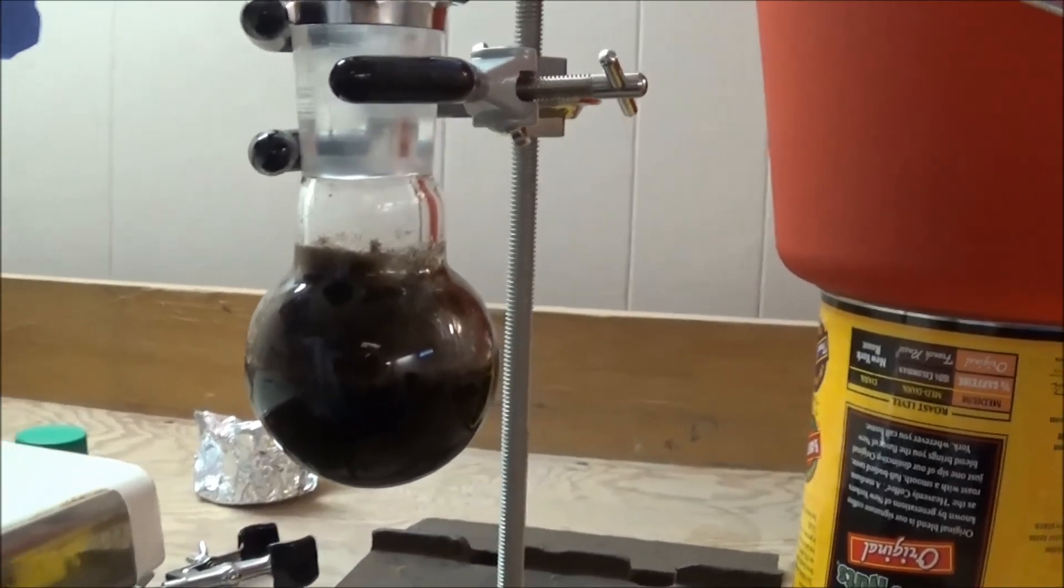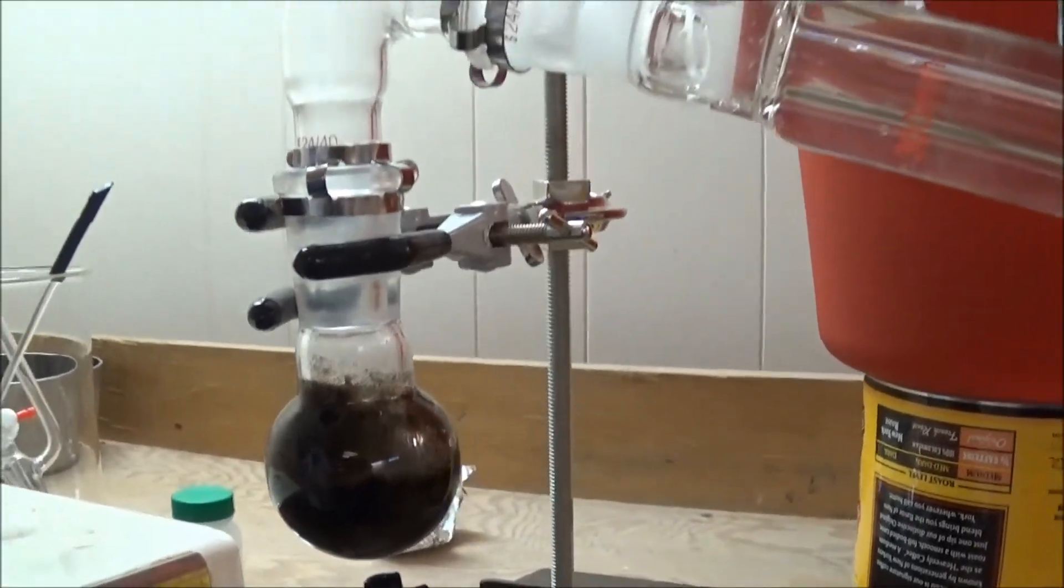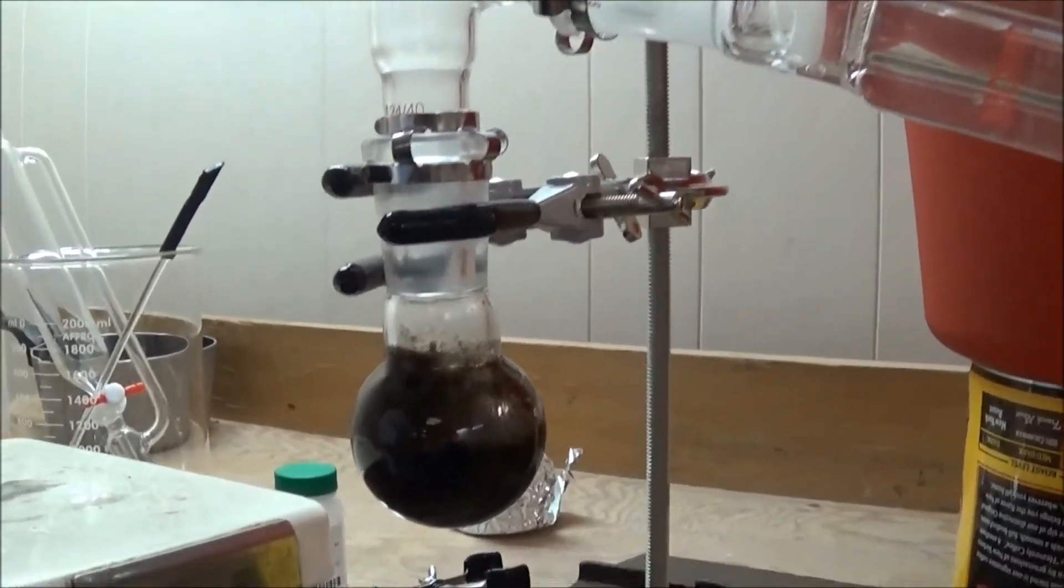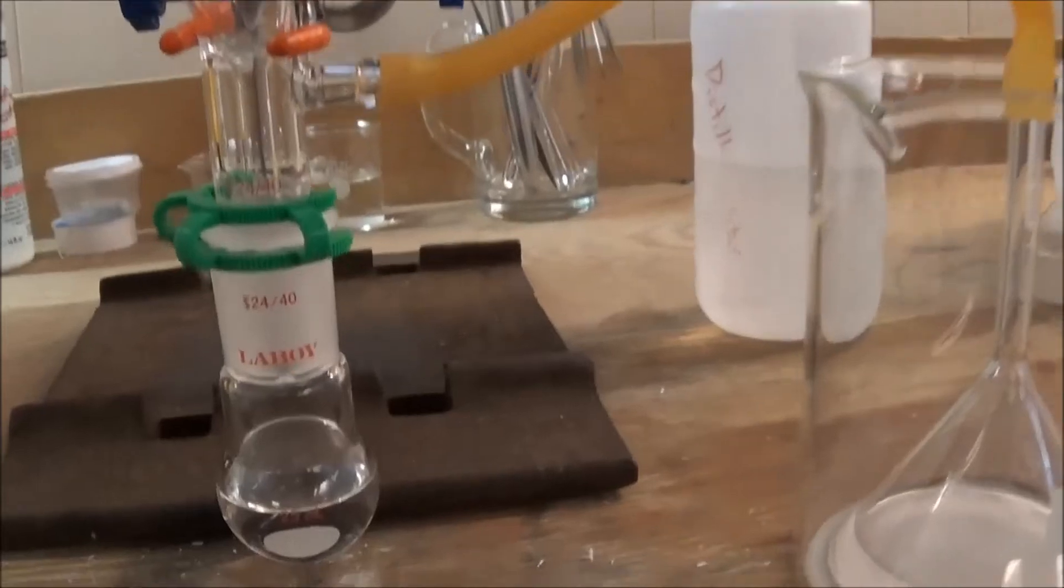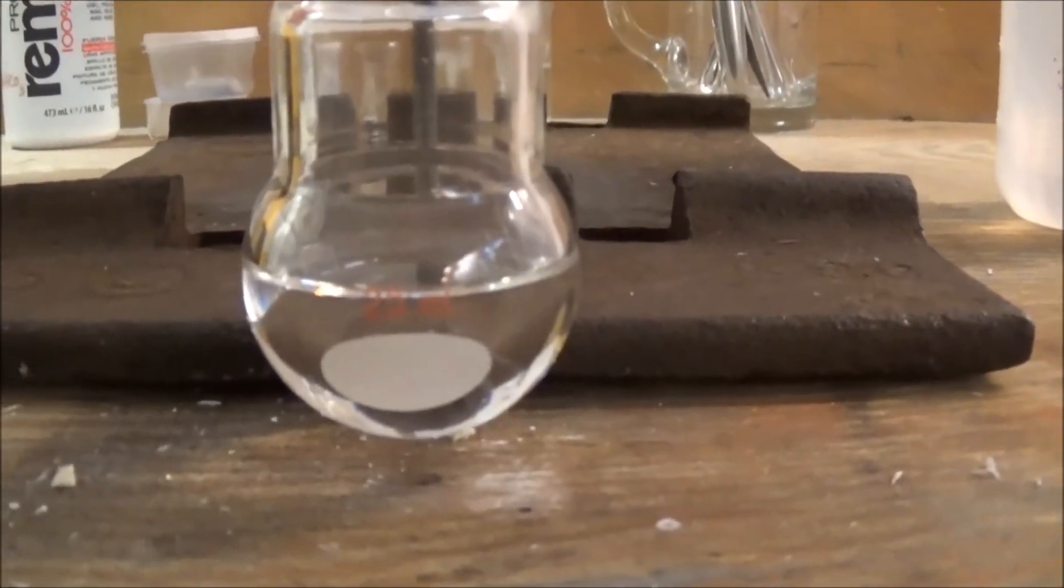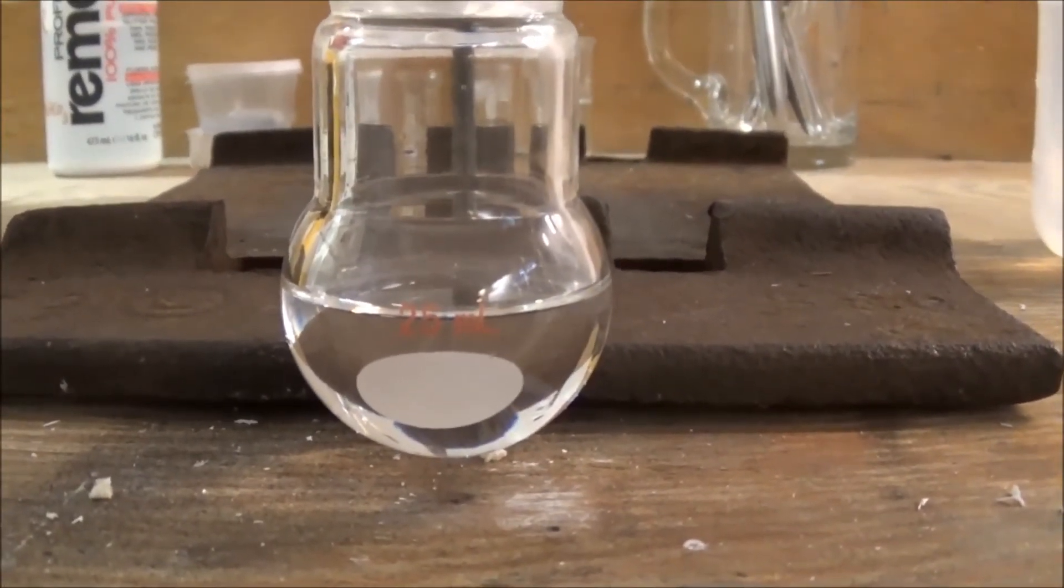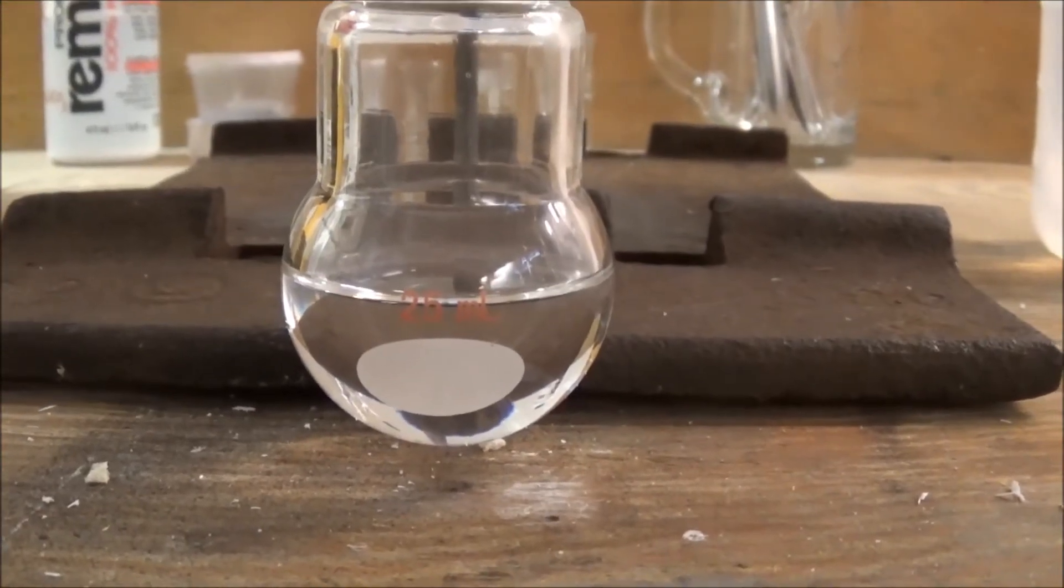It started to get very foamy, and it was going to go in the condenser, so I turned off heating. And if you look over here, we have our final yield. It looks to be about 20 milliliters of acetic acid, but we'll find out when we measure it.